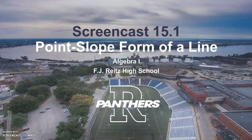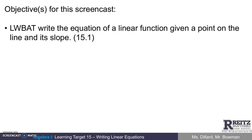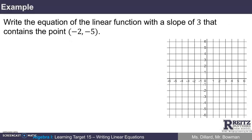Thanks for watching this screencast. The objective of this screencast is that learners will be able to write the equation of a linear function given a point on the line and its slope. Here's an example of the problem we're going to use: write the equation of the linear function with a slope of 3 that contains the point negative 2, negative 5.